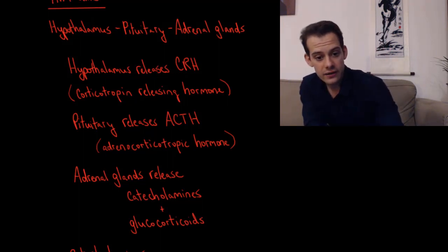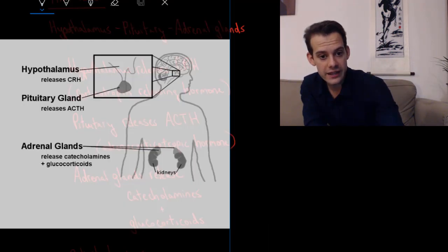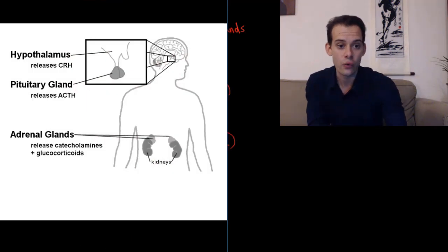And here's a simple diagram showing this HPA axis. So we have the hypothalamus here releasing its CRH, which is going to tell the pituitary gland to release ACTH, which is then going to travel in the bloodstream and get to the adrenal glands here just above the kidneys. And they're going to release catecholamines and glucocorticoids.